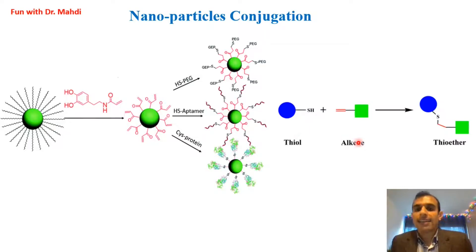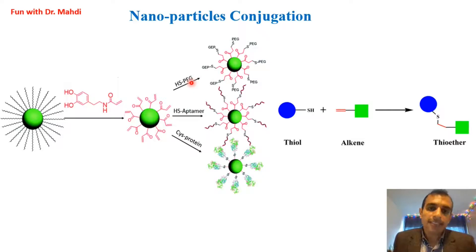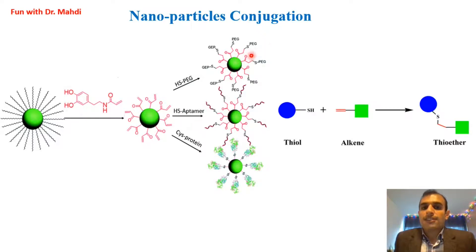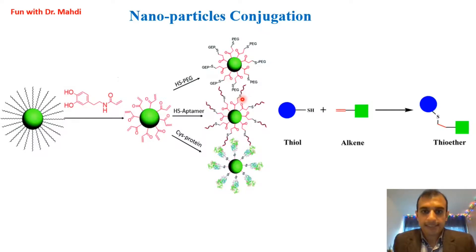Now, in the next step, we would like to do bioconjugation and connect biomolecules on the surface of nanoparticles. We would like to use thiol-ene click chemistry — a reaction between a thiol and an alkene. We already attached alkene on the surface of the nanoparticle. For example, we can connect PEG with a thiol group: after the thiol-ene click reaction between the thiol in PEG and the alkene on the nanoparticle surface, we functionalize the nanoparticle with PEG. Similarly, we can attach an aptamer with a thiol group to the nanoparticle surface.